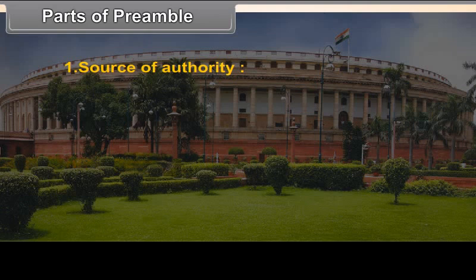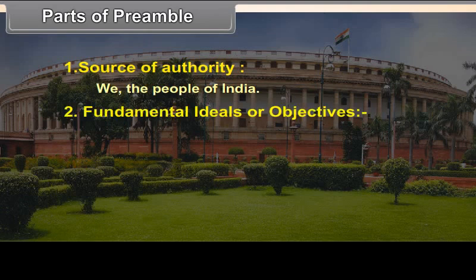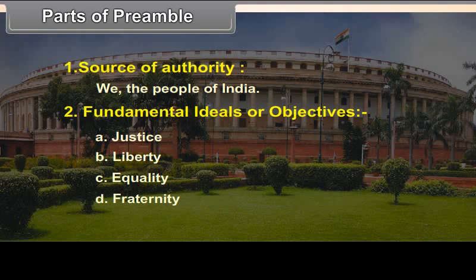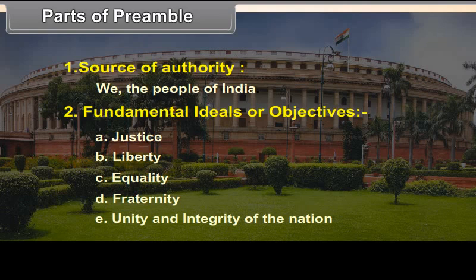Parts of the Preamble: First, Source of Authority — 'We the people of India.' Second, Fundamental Ideals or Objectives: A. Justice, B. Liberty, C. Equality, D. Fraternity, E. Unity and Integrity of the Nation.